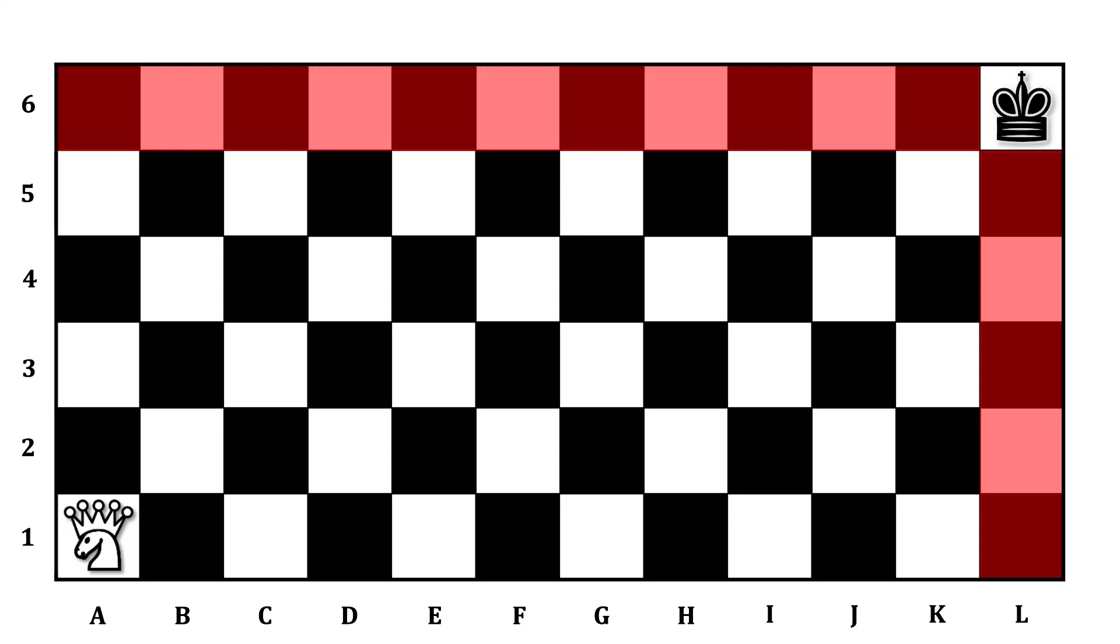Same thing with Column L. If the Amazon is anywhere in L, then she can go directly up to that King, capture the King, and win the game. As a result, you cannot leave the Amazon anywhere on 6 or L and expect to win.